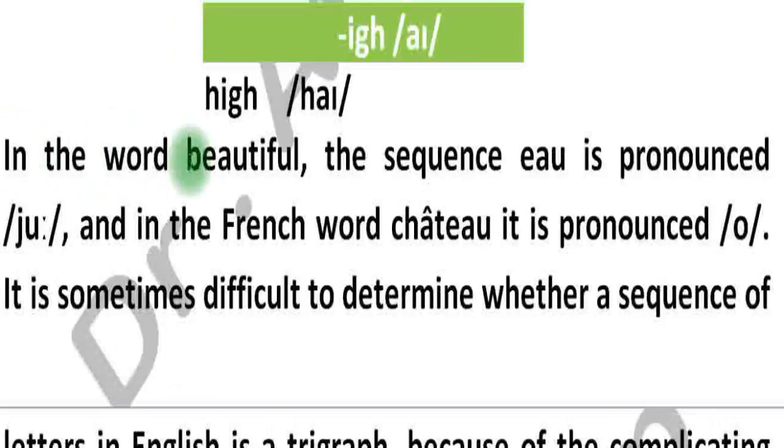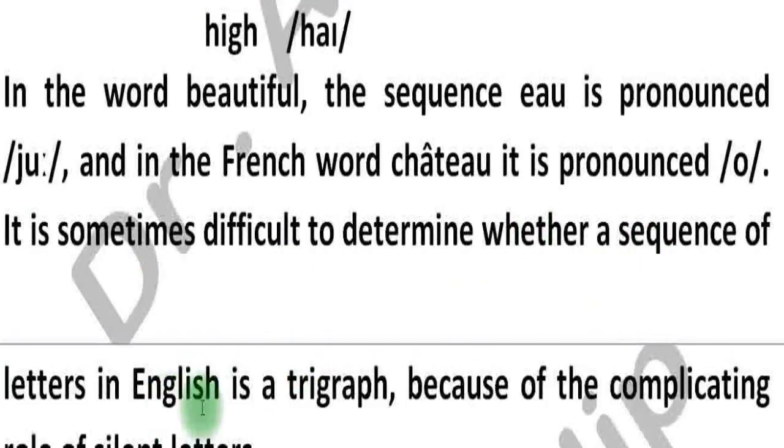In the word beautiful, the sequence E-A-U is pronounced U, and in the French word chateau it is pronounced O. It is sometimes difficult to determine whether a sequence of letters in English is a trigraph because of the complicating role of silent letters.